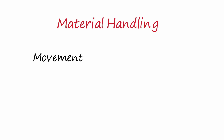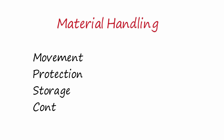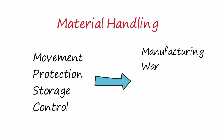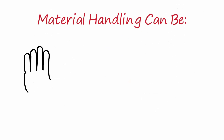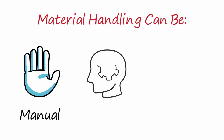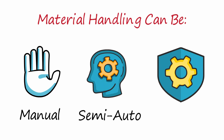Material handling is the movement, protection, storage, and control of materials and products throughout manufacturing, warehousing, distribution, consumption, and disposal. As a process, material handling incorporates a wide range of manual, semi-automated, and automated equipment and systems that support logistics and make the supply chain work.